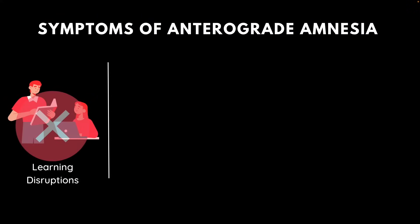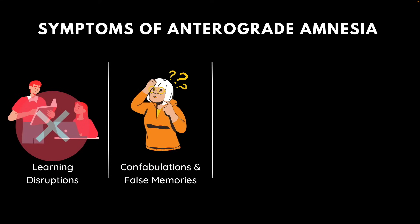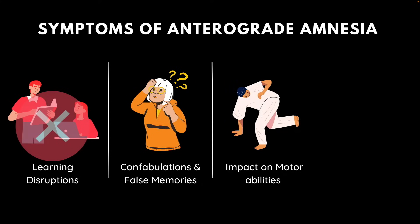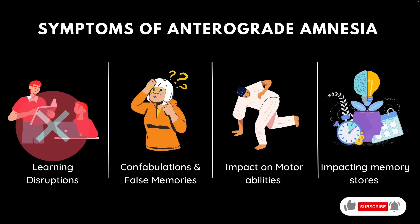There are various symptoms that mark the advent of anterograde amnesia. Firstly, the inability to form new memories impairs the ability to learn new things. In some cases, this inability can give rise to the formation of false memories which are misinterpreted with real memories, leading to a situation called confabulation. Additionally, it can impact one's motor abilities, as one might face issues of uncoordinated movements. Finally, all types of short and long-lived memories can get affected in this type of amnesia.